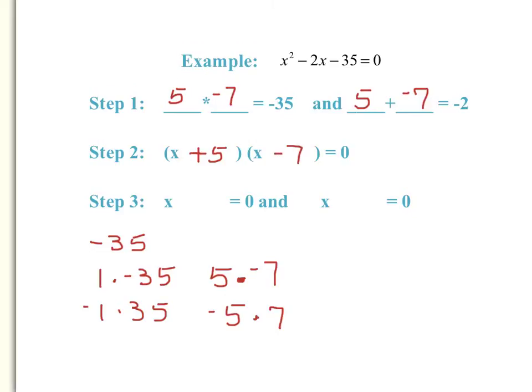At this point, it might be a good time to check yourself to make sure that you factored it correctly, and you can do so by using the FOIL method. X times x is x squared. We have x times negative 7, which is negative 7x. And then we have 5 times x, which is 5x. If you combine those like terms, negative 7x plus 5x is negative 2x. And for our last terms, 5 times negative 7 is negative 35. So you can check yourself to make sure you have factored correctly.